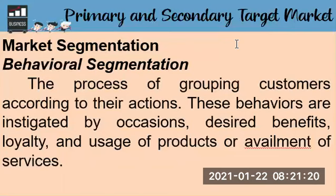Those are the different kinds of segmentation in targeting our market and identifying our primary and secondary target markets. Although segmentation is a strategic and efficient way of classifying customers, we also have the term market aggregation. Market aggregation happens when an entrepreneur wants to target a broader market — where the product or service offered is suited for an undifferentiated market, such as fruits, vegetables, rice, and water.